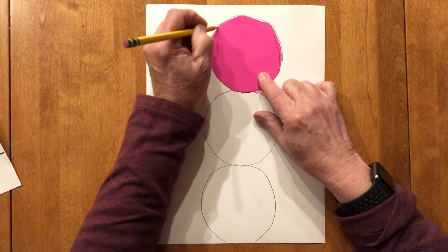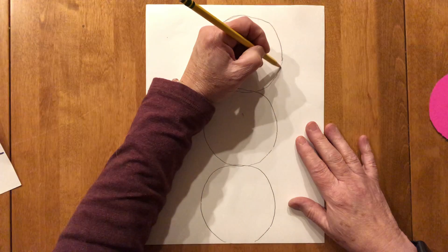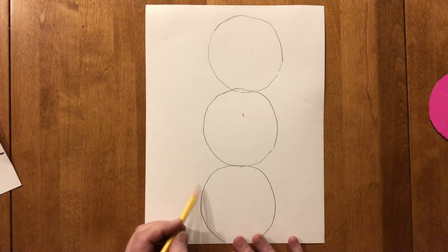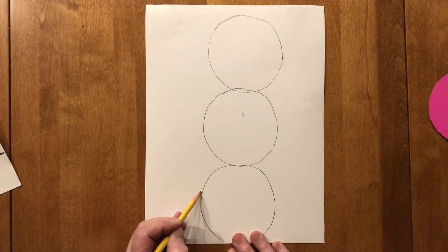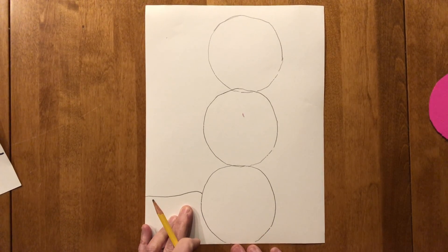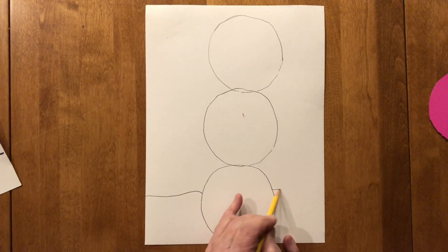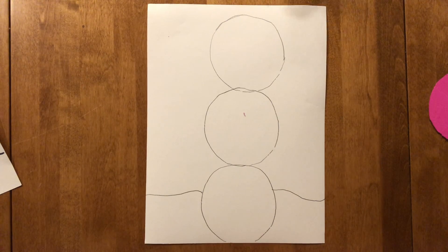Then I'm going to put my tracing dot aside and I'm going to draw my snowbank down here at the bottom. So on one side of my snow person I'm going to draw my line and then I'm going to draw it on the other side of my snow person.